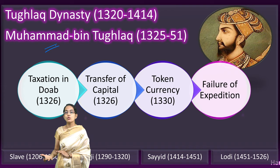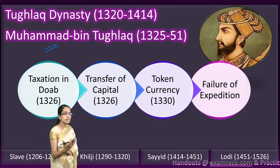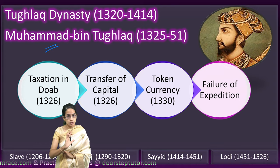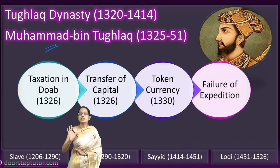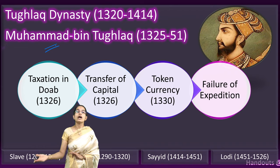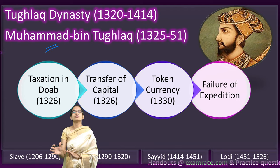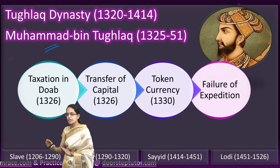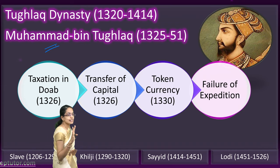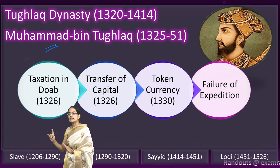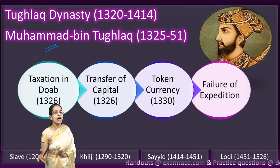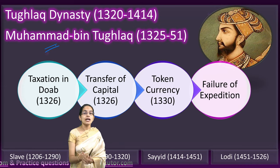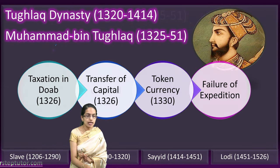Muhammad bin Tughlaq was known for his knowledge — he was a great mathematician and philosopher, a very learned and accomplished person. But as a ruler, he failed totally. Whatever he did, he was not able to implement his schemes properly. There were four important events under his reign: taxation in the Doab, the transfer of capital, token currency, and failures of expedition. Despite being accomplished and well-read, he created defective policies.